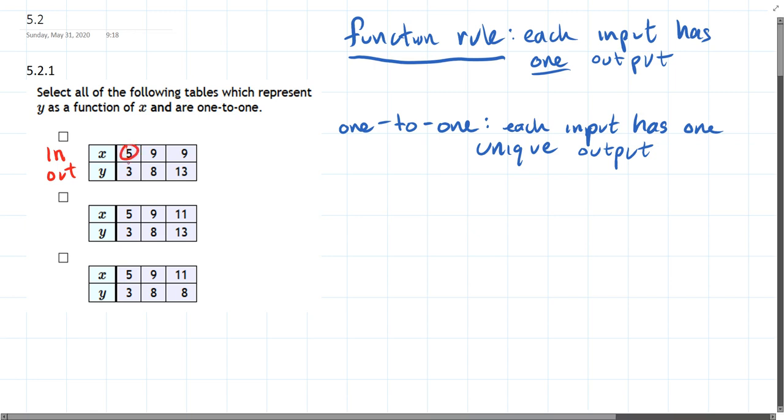So I see one input and one output. That's good. One input, nine. Output is eight. That's good. Input, nine. Output, thirteen. We've got a problem because nine is not allowed to have two outputs right there. So that's not a function.